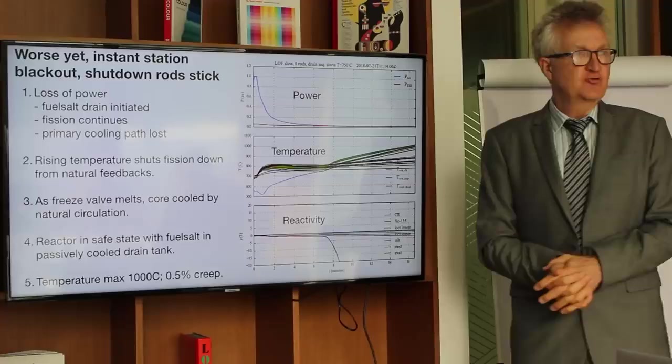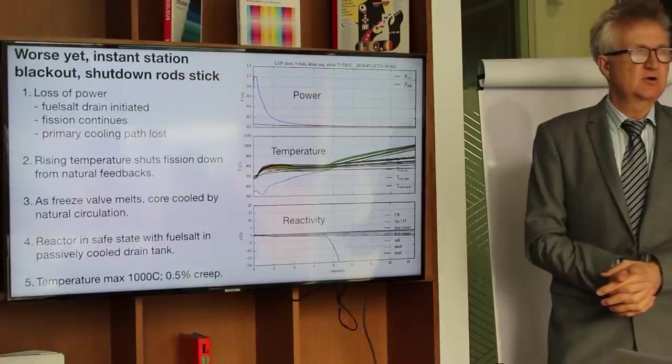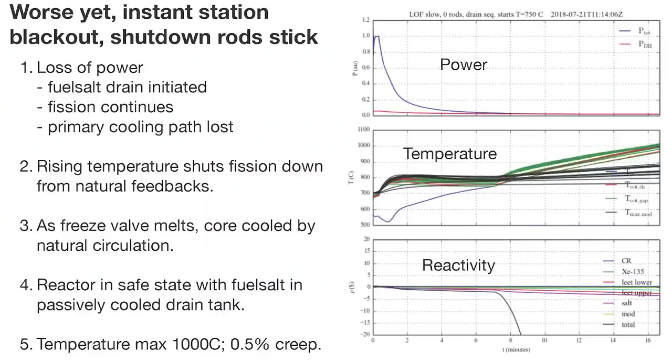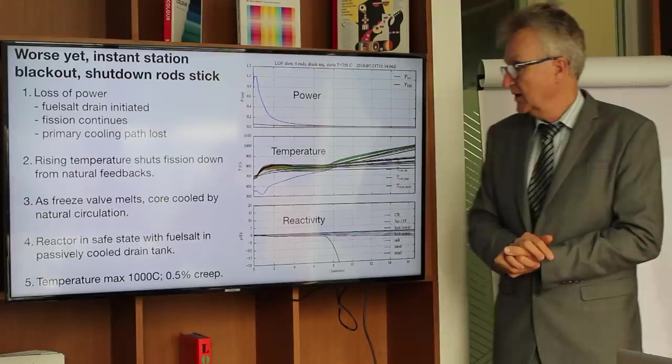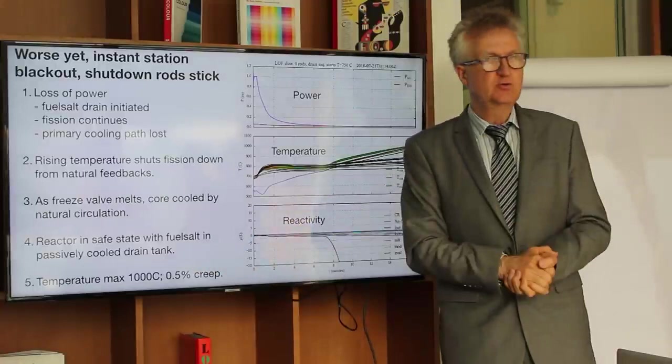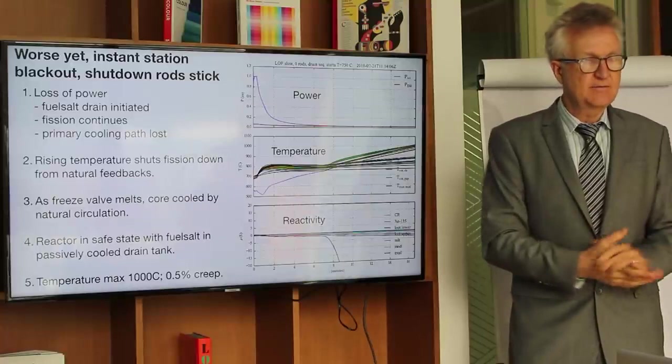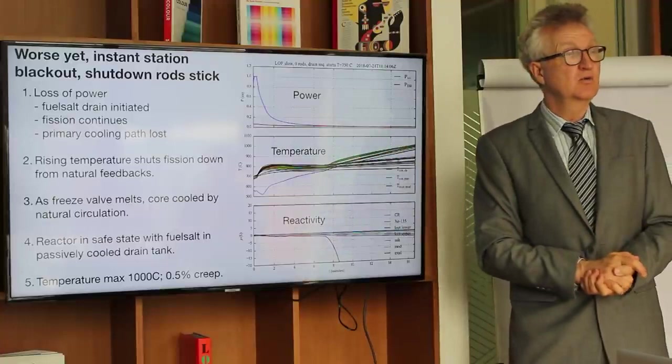The worst one would be instant station blackout and triple failure on the shutdown rods. So all shutdown rods fail and we lost all electricity instantly. In that case, the temperature starts climbing. And what stops the fission will be when the salt gets to 800 degrees C. That's about 80 seconds. And then it climbs from there. So at the end of that very bad accident, the salt would have gotten to 1000 degrees C. And we would suffer creep damage for about half of 1% of the steel life. Obviously, since the shutdown rods didn't work, we would say this can is condemned and replace it. But there was no release. Even in this very worst of accidents.